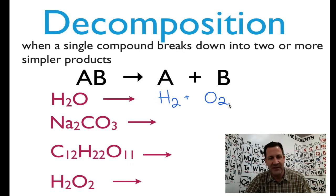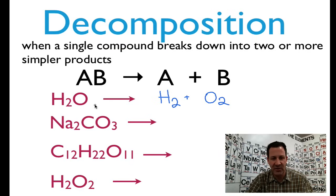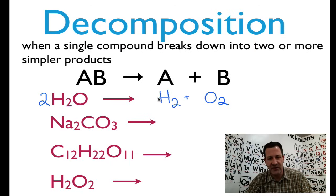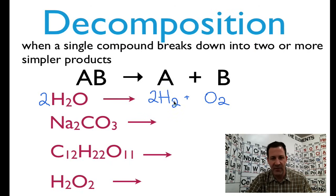And let's see, we want to balance this. We have two hydrogens and two oxygens. So we're going to put a 2 here. That gives us four hydrogens. And that means we're going to have to put a 2 here. And I think that chemical equation is balanced just like that.